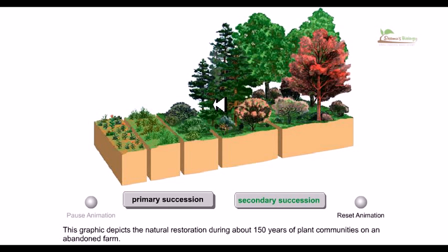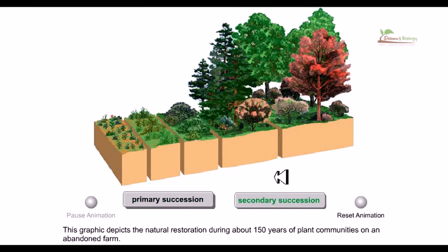To summarize: secondary succession requires soil to be present, while in primary succession there is no soil — weathering must occur first. This makes primary succession much harder and it takes much longer. Secondary succession is much more common; it is simply the restoration of a disturbed region and can happen relatively easily. That's it, and I hope it helps. Thank you.